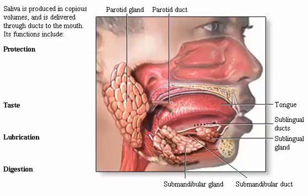Saliva is produced in copious volumes and is delivered through ducts to the mouth. Its functions include protection, taste, lubrication, and digestion.